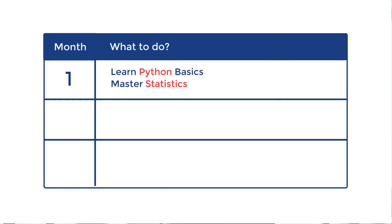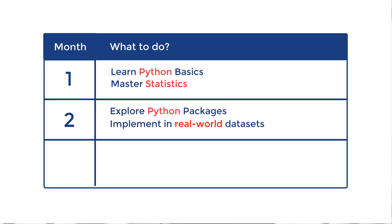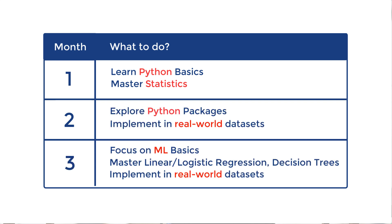So this is the 90-day study plan: month one focuses on Python and statistics basics; month two focuses on Python packages and learning how to explore data; and month three focuses on machine learning basics. Follow this study plan and you are on your path to becoming a junior data scientist.